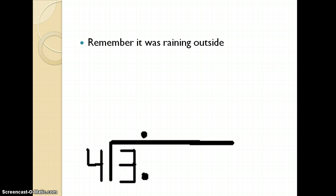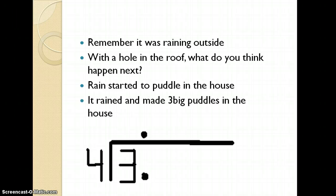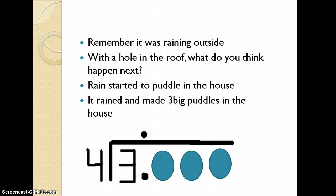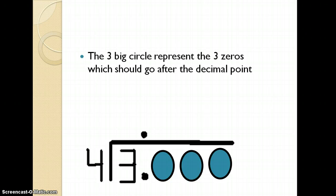So, the tale continues. Remember, it was raining outside. With a hole in the roof, what do you think happened next? Rain started to puddle in the house. It rained and made three puddles in the house. One, two, three big puddles. You could have more puddles if you want to. And if you pass the decimal, you can have as many as you want to.